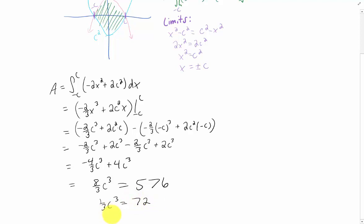And then if we multiply both sides by three, we get C cubed equals 216, which is pretty cool because if we take a cube root of 216, we get C equals six. And that is the answer to the problem.